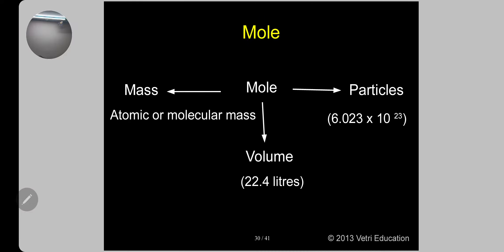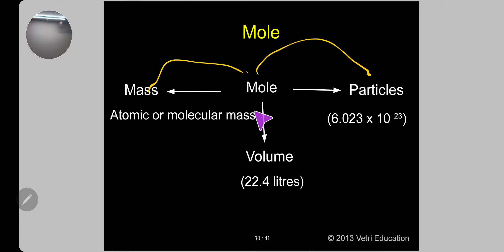Molar volume: the volume occupied by one mole of any gas at NTP or STP is called molar volume, which equals 22.4 liters or 2.24 × 10⁻² m³. Avogadro's number: the total number of atoms or molecules present in one mole is called Avogadro's number, represented by Nₐ = 6.023 × 10²³. For atomic elements use atoms as particles; for molecular elements or compounds use molecules.